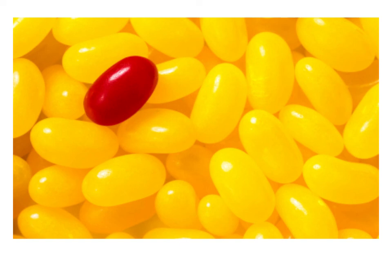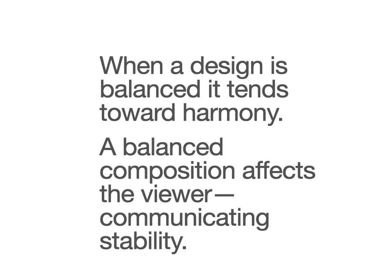Not only is this emphasis through color, but also through contrast — the yellow and red are very different on the value scale; the red is much darker than the lighter yellow. If you made this into a black-and-white image, that would be more obvious. And placement: the jellybean is in that important upper left corner. The bottom line on balance and emphasis as principles of design: when design is balanced, it tends toward harmony. A balanced composition communicates stability.